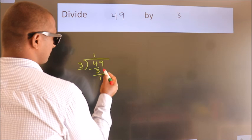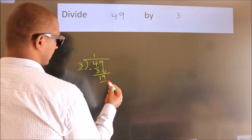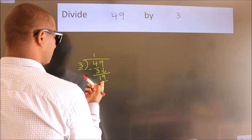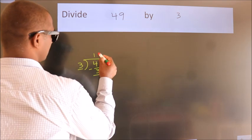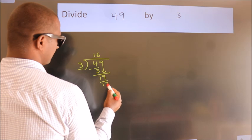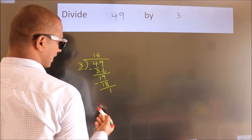After this, bring down the beside number. So 9 down. So 19. A number close to 19 in the 3 table is 3, 6, 18. Now we subtract. We get 1.